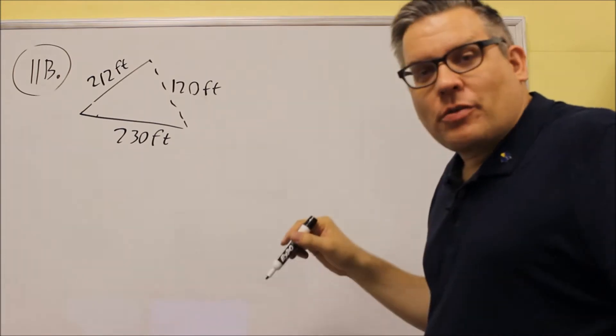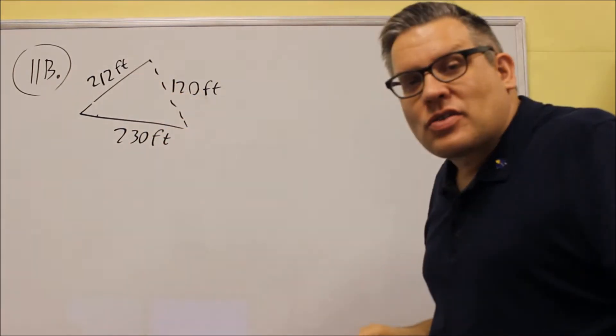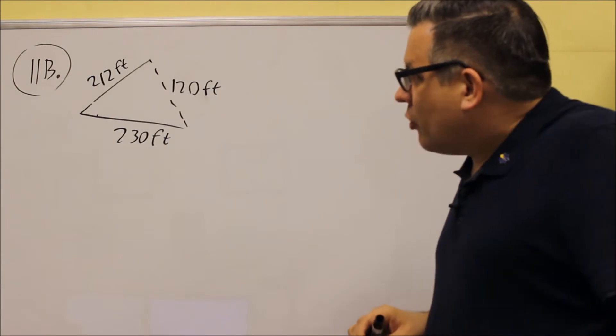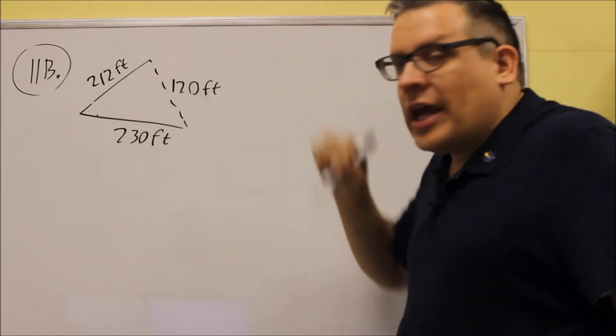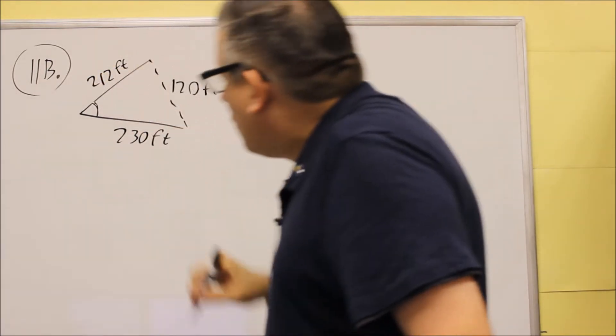We're given that they're 120 feet across, and these are the lengths of the solid lines, and so we want to figure out what the angle between the two barges is. Now, that's going to be this angle right here.